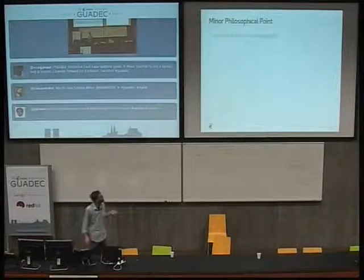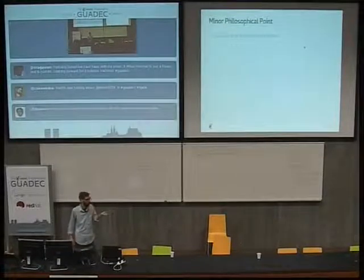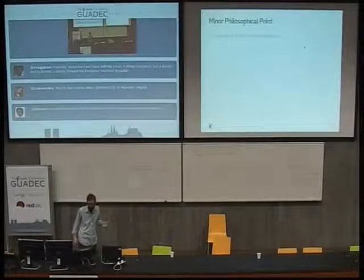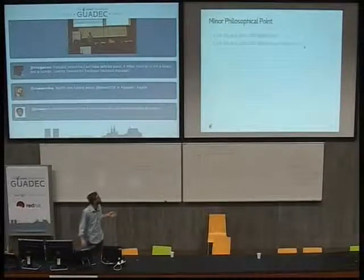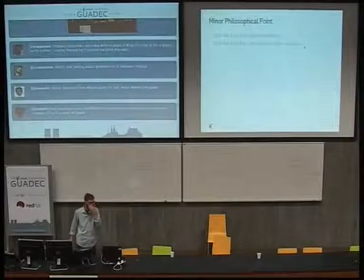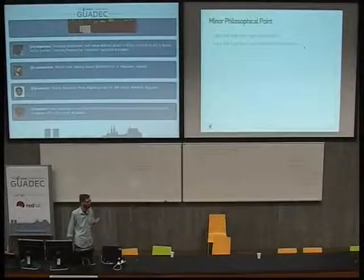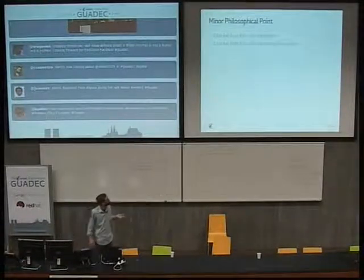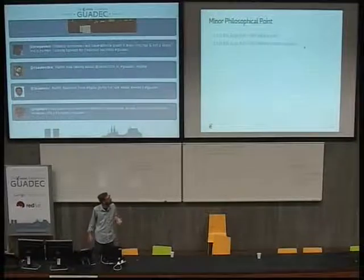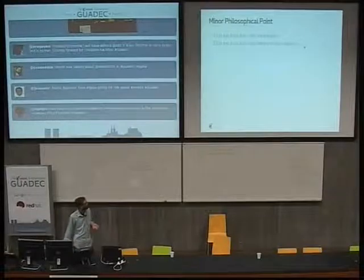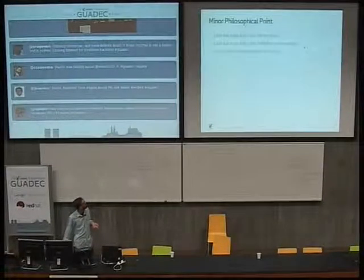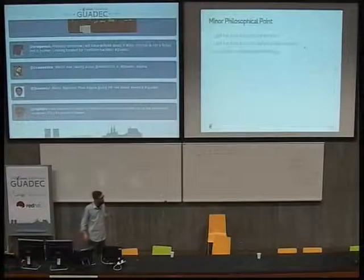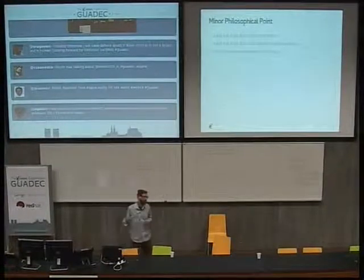Code has bugs that crash the program — all code has bugs. And code has bugs that allow arbitrary code execution, especially if that code includes a JavaScript engine that's writing machine code into memory. Not only does code have bugs, code has dependencies that have bugs.